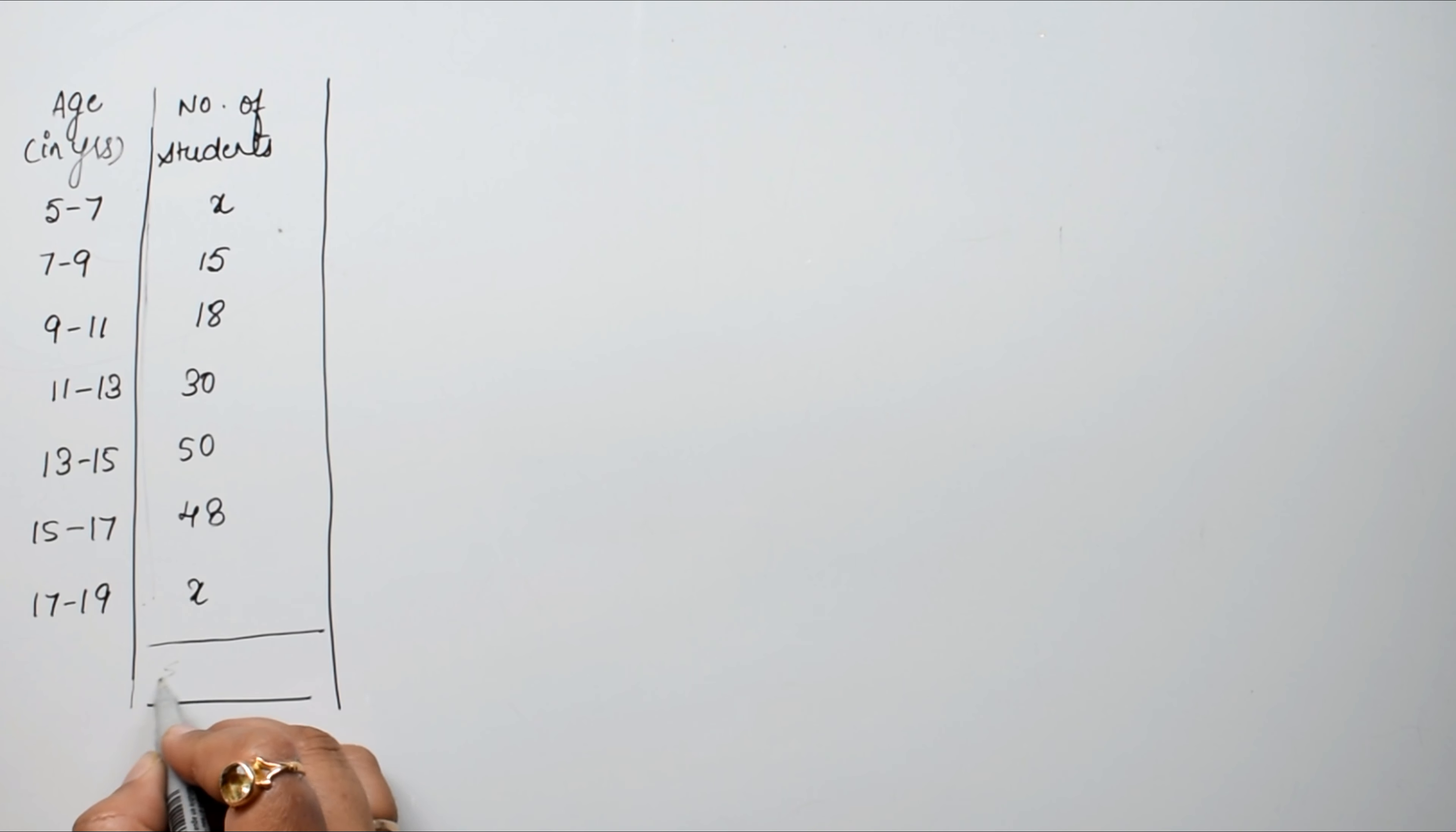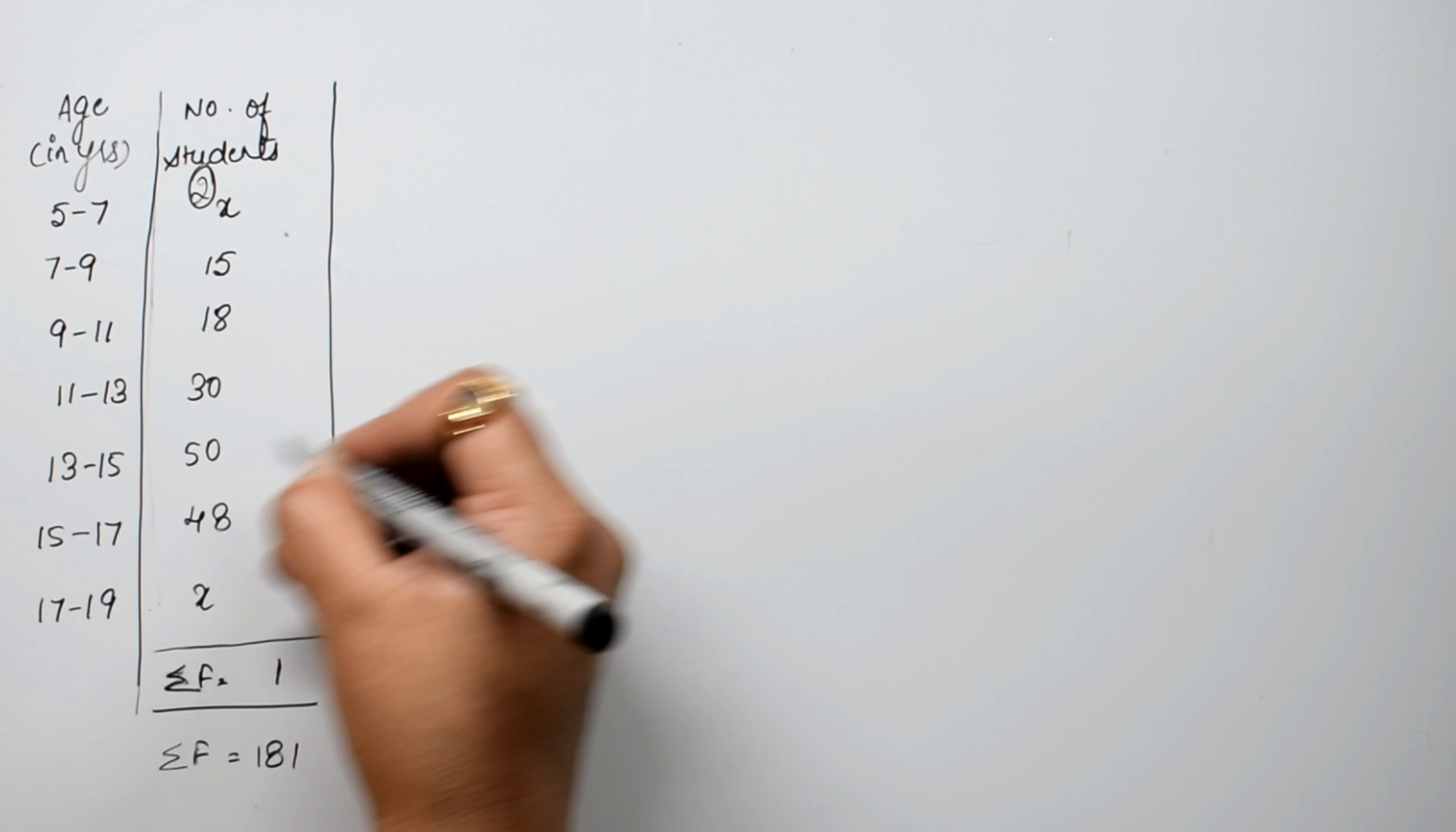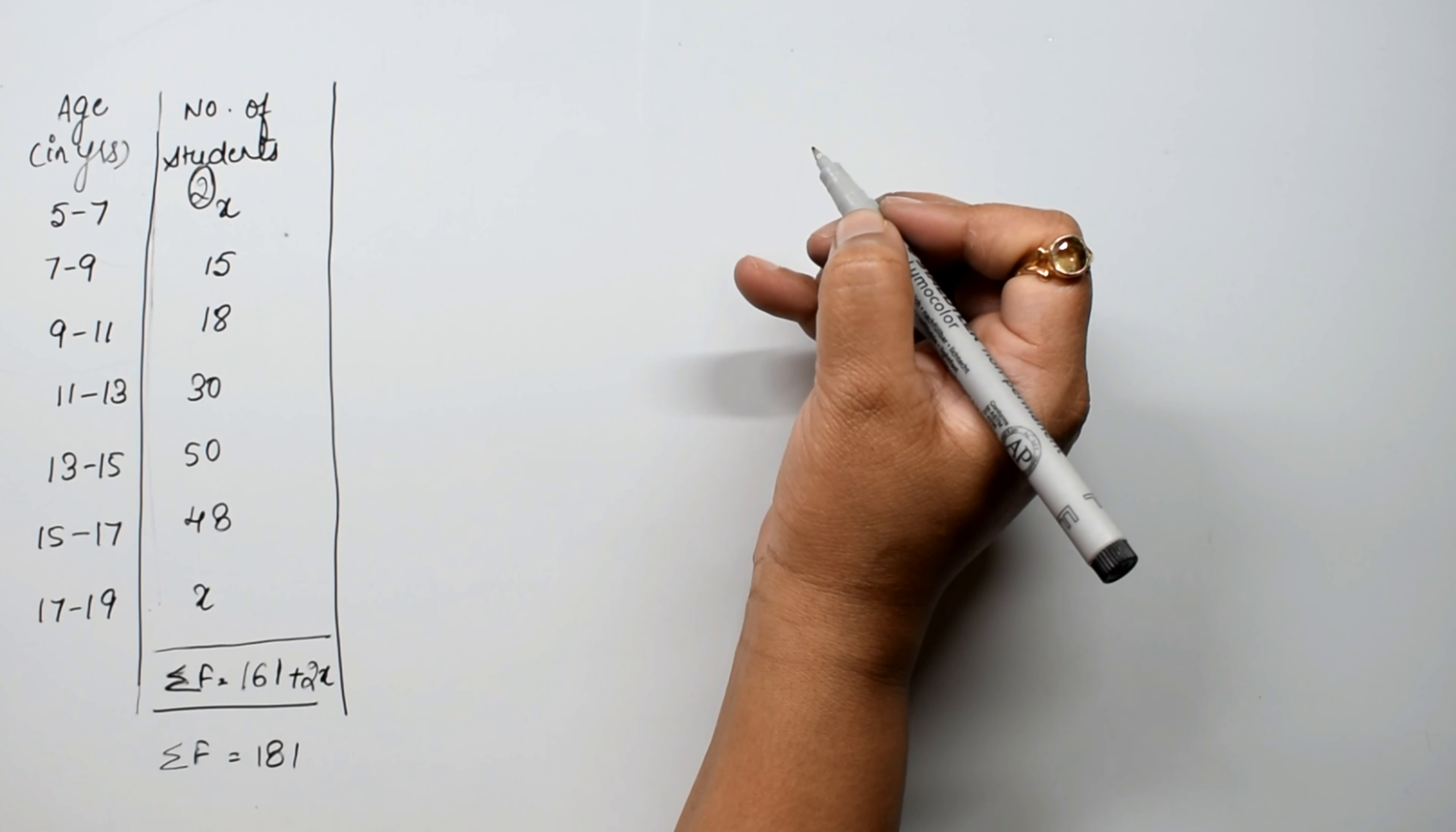Now, summation of f equals to 5 plus 15 is 20, plus 18 is 38, plus 30 is 68, plus 50 is 118, plus 48 is 166, plus two x. So 161 plus 2x. Now we need to find missing frequencies.